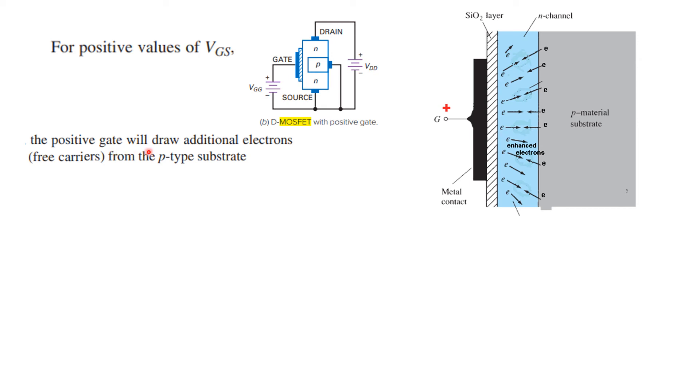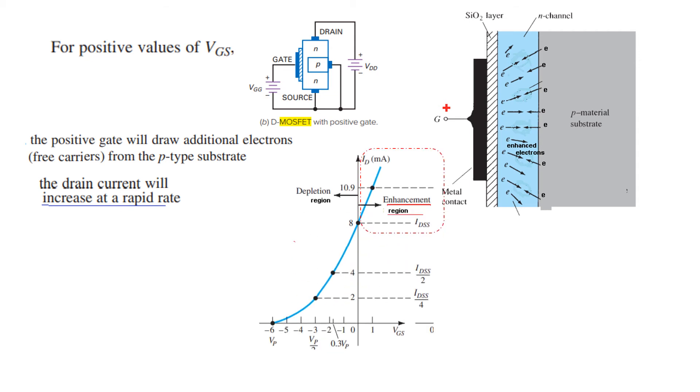The positive gate will draw additional electrons or free carriers from the P-type substrate. The drain current will increase at a rapid rate. And so you can see here the drain current is now increasing when the gate voltage is positive. So this we call to be operating in the enhancement mode or it is the enhancement region.